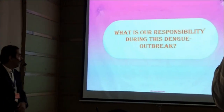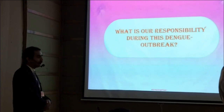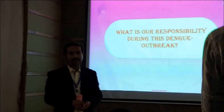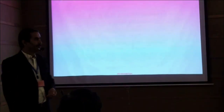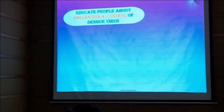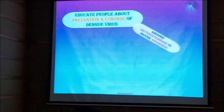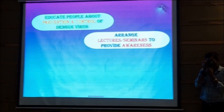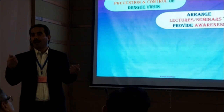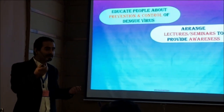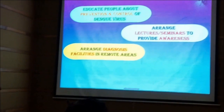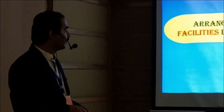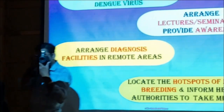What is our responsibility during this dengue outbreak? We belong to an educated society. What can we do for our society, for our family members, and for other populations? We should educate people about the prevention and control of the dengue virus. Arrange lectures and seminars to provide awareness about the dengue virus — what is the mode of transmission, how this virus is transmitted, what are the characteristics of the mosquito, and how can we compare this mosquito with other common mosquitoes. Arrange diagnosis facilities in remote areas. We should also locate the hot spots of mosquito breeding and inform health authorities to take measures.